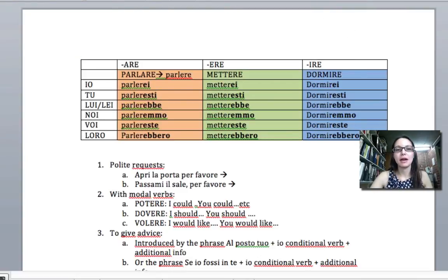Okay, so here we have it. In summary we have the same endings for all of them: ei, esti, ebbe, emmo, este, ebbero regardless of whether they are -are,